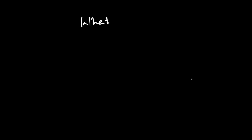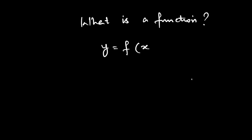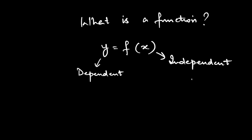Now we need to understand what a function is. A function is an expression or rule that defines a relationship between two variables, where the value of one would be dependent on another. If I say y is a function of x, in this case y is a dependent variable and x is an independent variable. The value of y depends on the value of x.